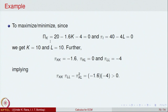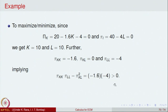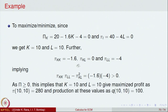To confirm this is indeed a maximum, we apply the second derivative test. The second partial derivative of π with respect to K is −1.6, the second partial derivative with respect to L is −4, and the mixed partial derivative is 0. The discriminant D = π_KK · π_LL − (π_KL)² is positive and the leading second derivative is negative, confirming the function has an absolute maximum at K = 10, L = 10.